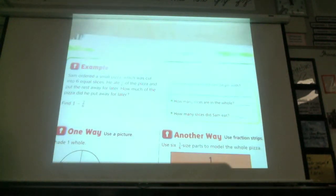Sam ordered a small pizza, which was cut into six equal slices. Those are pretty big slices of pizza. He ate two-sixths of the pizza and put the rest away for later. How much of the pizza did he put away for later? I like how they showed this as one minus two-sixths. Because we have one whole, all of a sudden you guys are going to panic. Wait, I don't know how to do one minus two-sixths because they don't have the same denominator, do they?